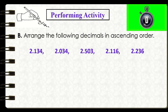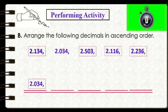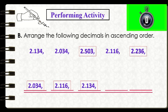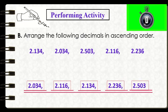Time is up. Let's check if your answers are correct. If you arrange these numbers from the least to the greatest, the sequence is: 2 and 34 thousandths, 2 and 116 thousandths, 2 and 134 thousandths, 2 and 236 thousandths, and the greatest is 2 and 503 thousandths.